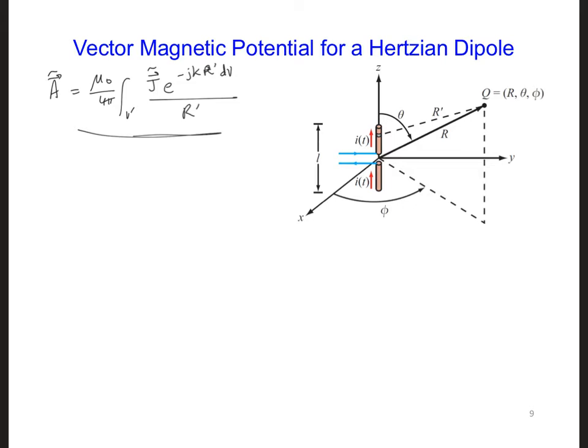If we assume that the cross-sectional area of the dipole is s, then we can say j vector phasor is here in the z-hat direction, and it's i-naught over s. And then dv prime is, we're going to integrate over the dimensions of the dipole. So this is going to be s times dz.